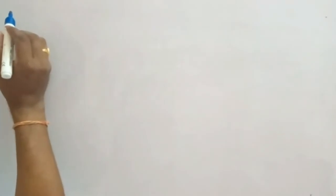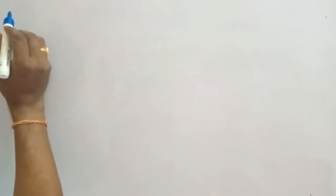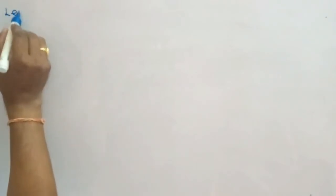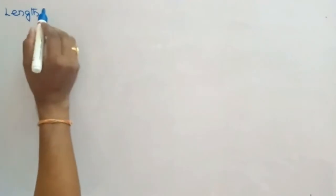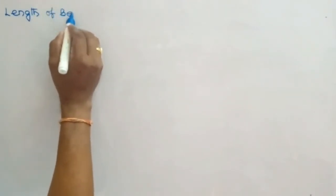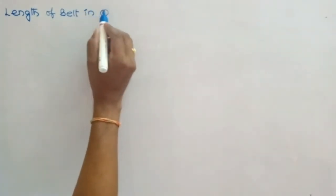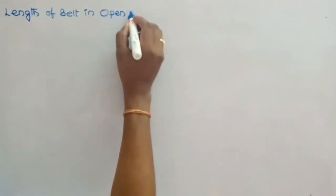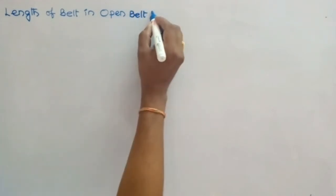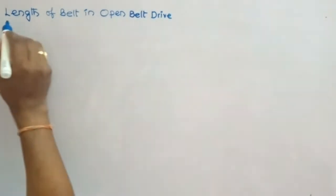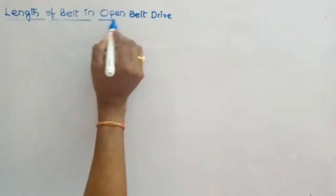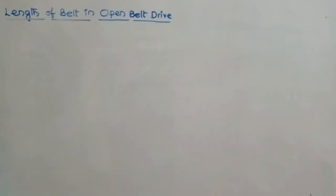Next we will look at the length of the belt drive — specifically the length of the open belt drive first, and later the length of the belt in the cross belt drive. The open belt drive is used to transmit power from one shaft to another shaft when both shafts are rotating in the same direction.